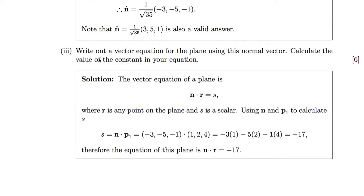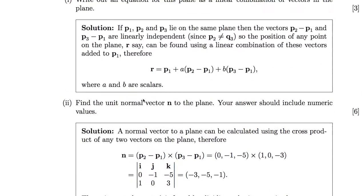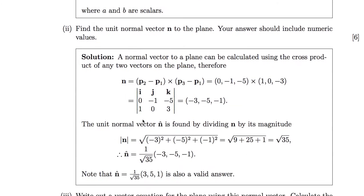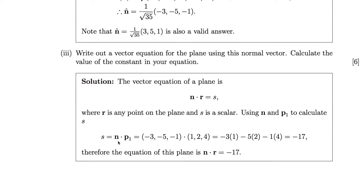The final part of this question: write out a vector equation for the plane using this normal vector. The vector equation of a plane is N dot R equals a scalar S, where N is the normal vector and R is any point on the plane. Using P1 which is (1, 2, 4), the dot product between N and P1 comes out as minus 17. So the equation of the plane is N dot R equals minus 17.